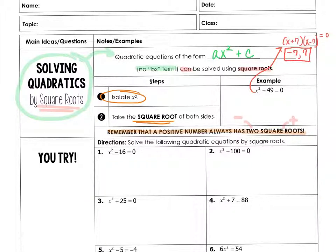But to solve by square roots, which is just another method for solving the same question, we're going to first isolate x² by adding 49 to both sides. Then we'll take the square root of both sides, and x is equal to plus or minus 7.